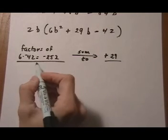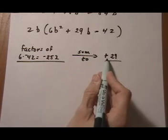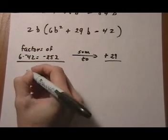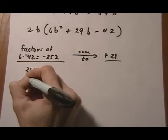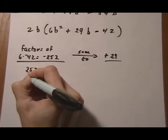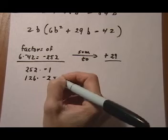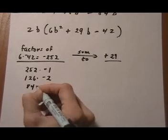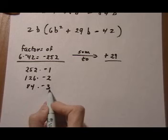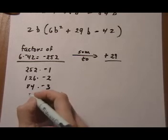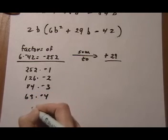So let's start listing out what the factors of minus 252 are. Keeping in mind, we want them to add up to be a positive number. So the larger factor is always going to be positive. We have 252 times minus 1. And then try dividing 252 by 2 and see if that works. It does. So we have 126 times minus 2. Does it divide by 3? Yep. That'll give us 84 times minus 3. Right now this is not summing to 29, but we're getting there. So dividing it by 4 works. That gives us 63 times minus 4.